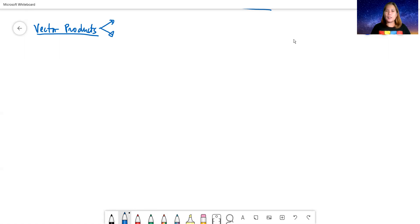There are two kinds of vector products. We have the scalar product, which is also known as the dot product. Why do you think it's called the dot product? Because we are using a dot as our mathematical symbol. Then we go to vector product, also known as cross product, because we use cross for our symbol.